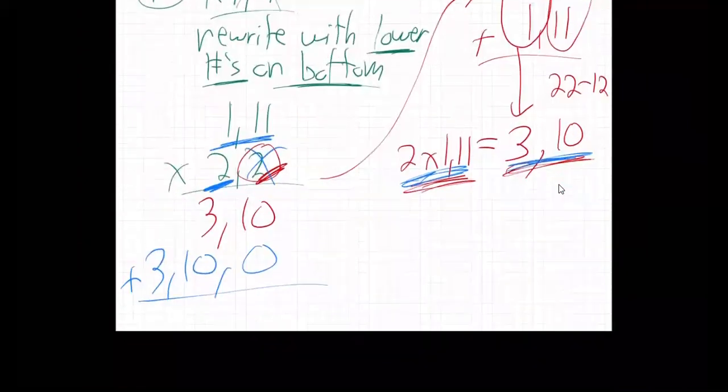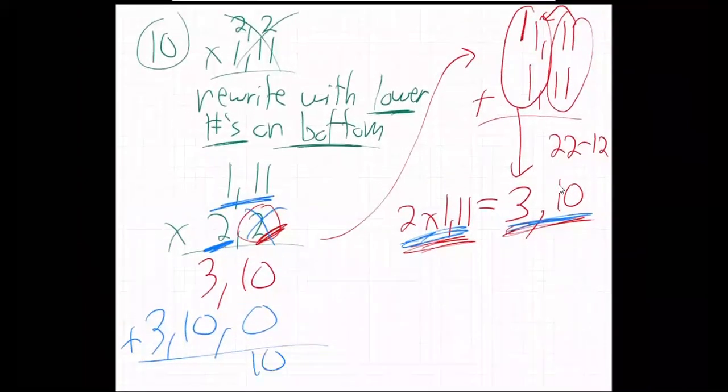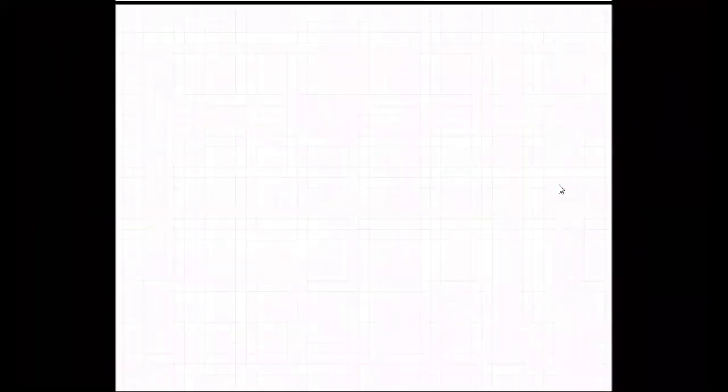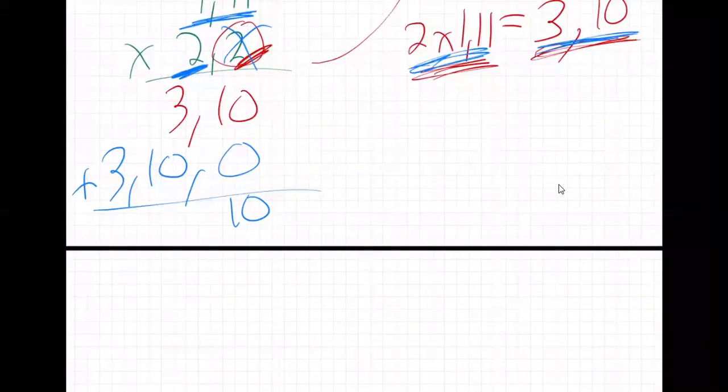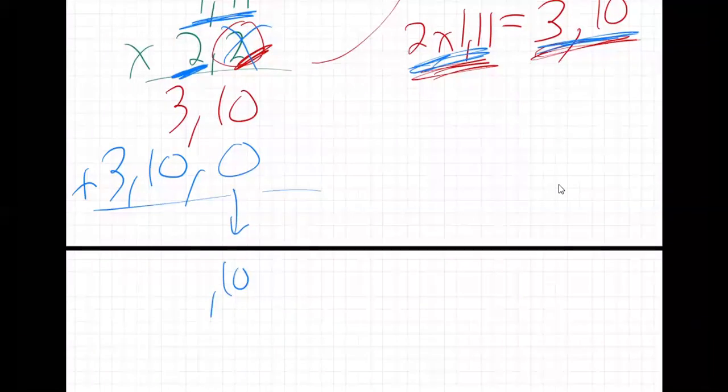10 and 0 is 10. I'm going to run out of room here a little bit. There we go. All right. So 10 and 0. Here, let me give more room to this. 10 and 0 is 10. We can have a 10 in one place. That's fine. 10 and 3 is 13. We can't have that. Not in base 12.